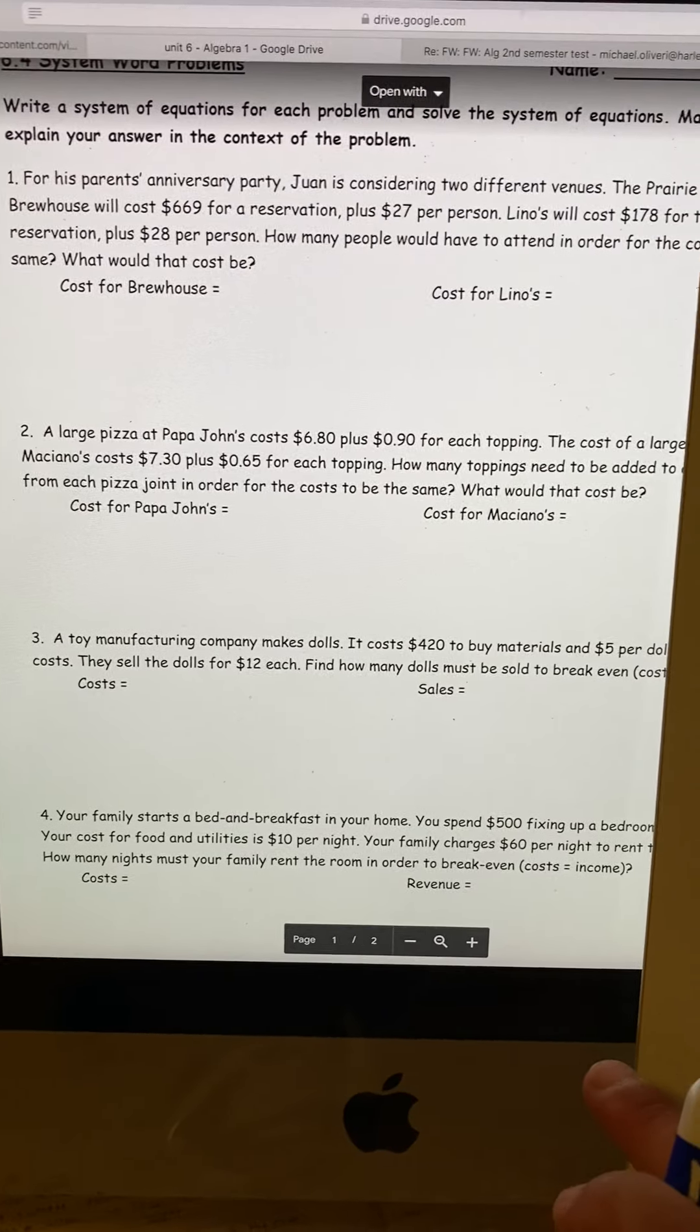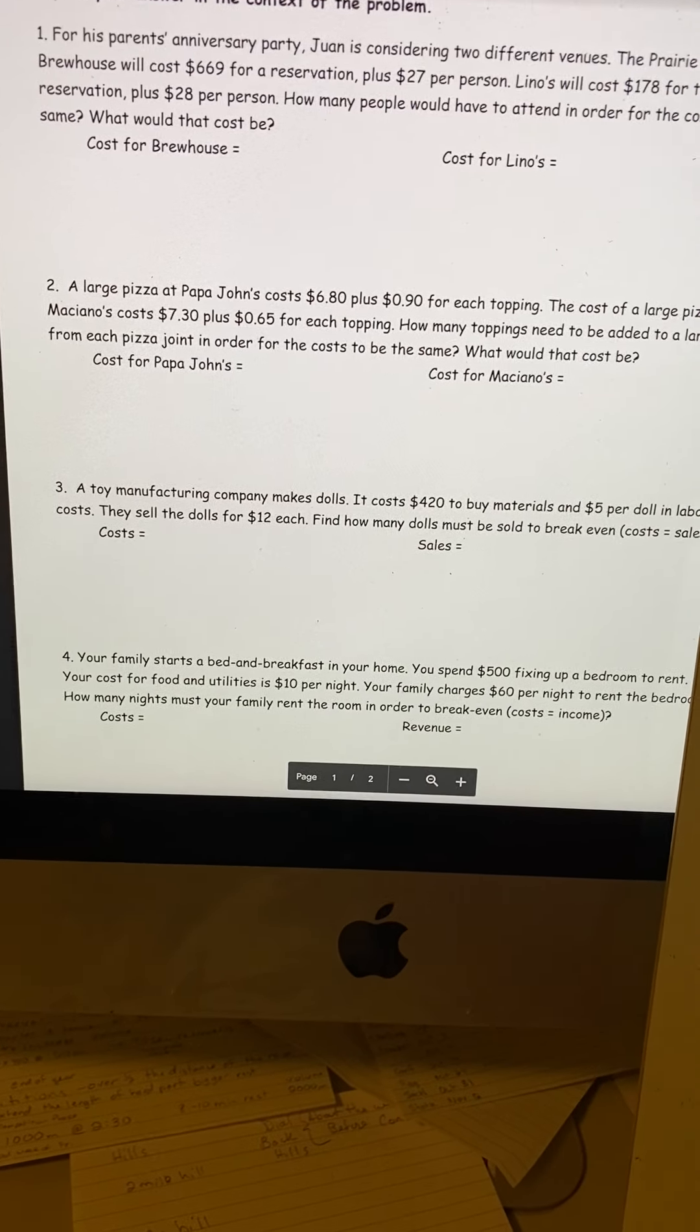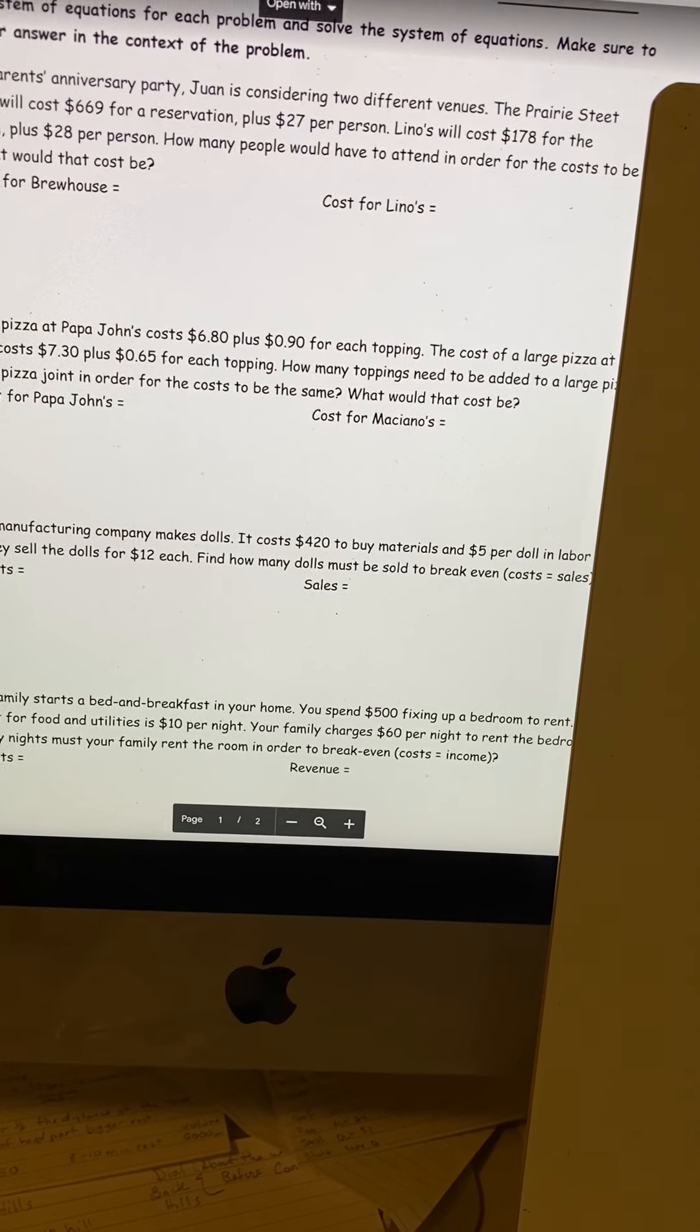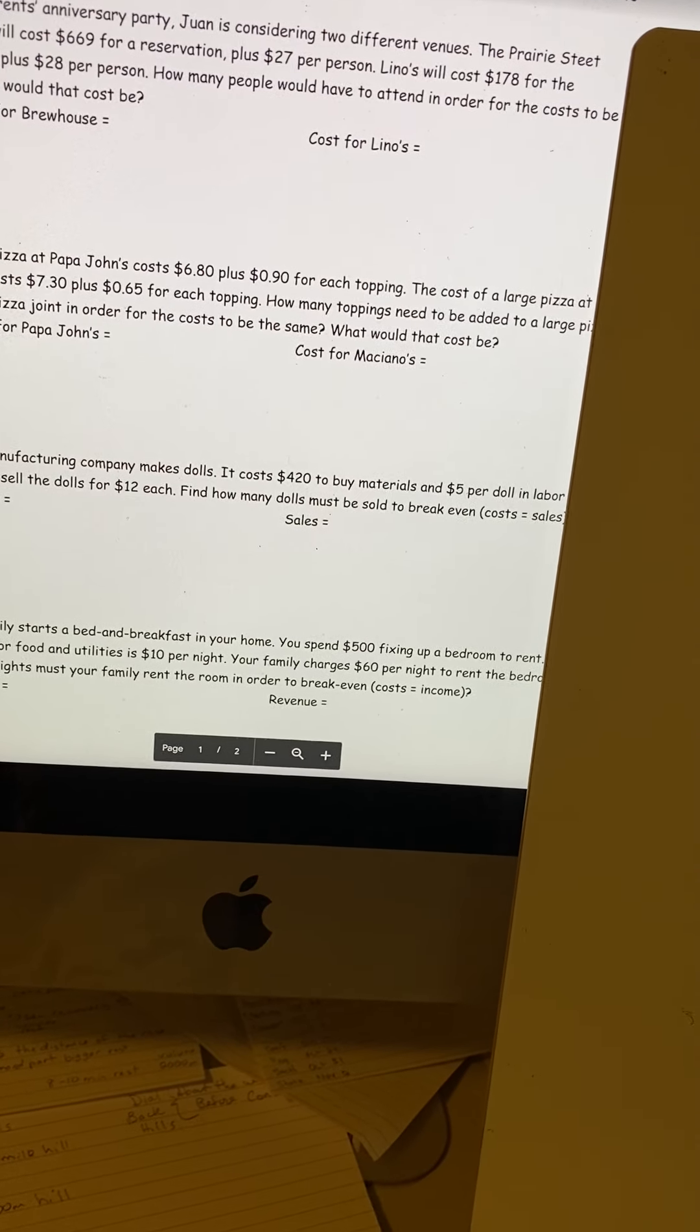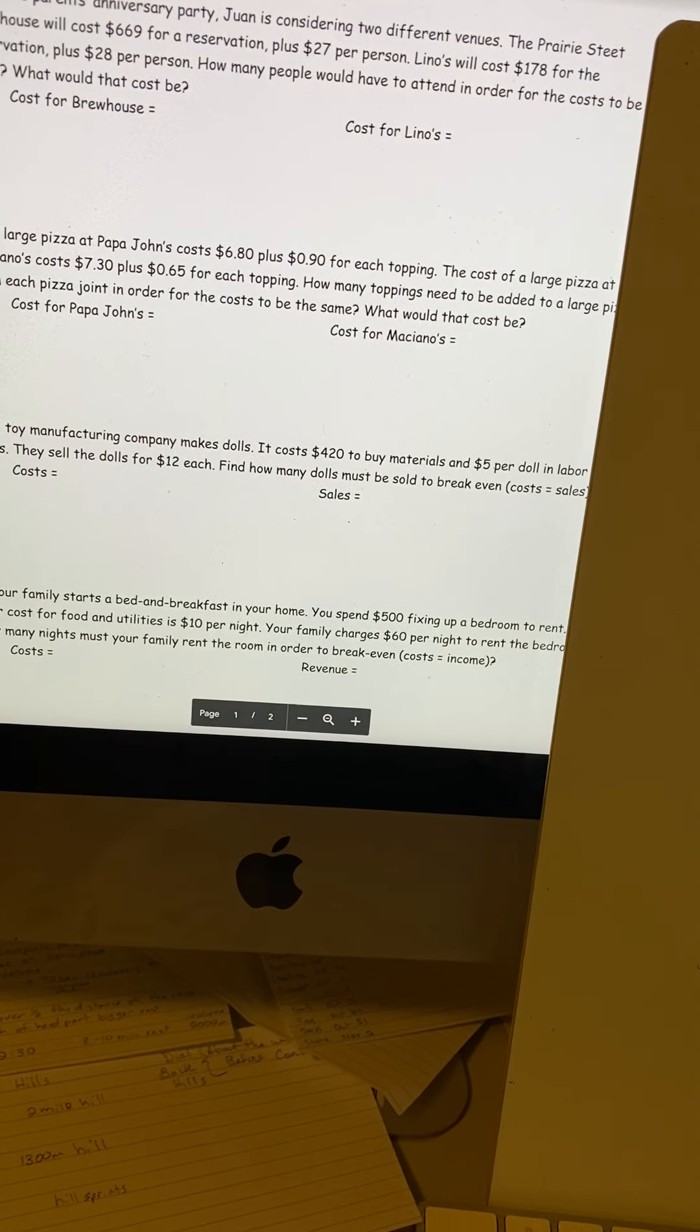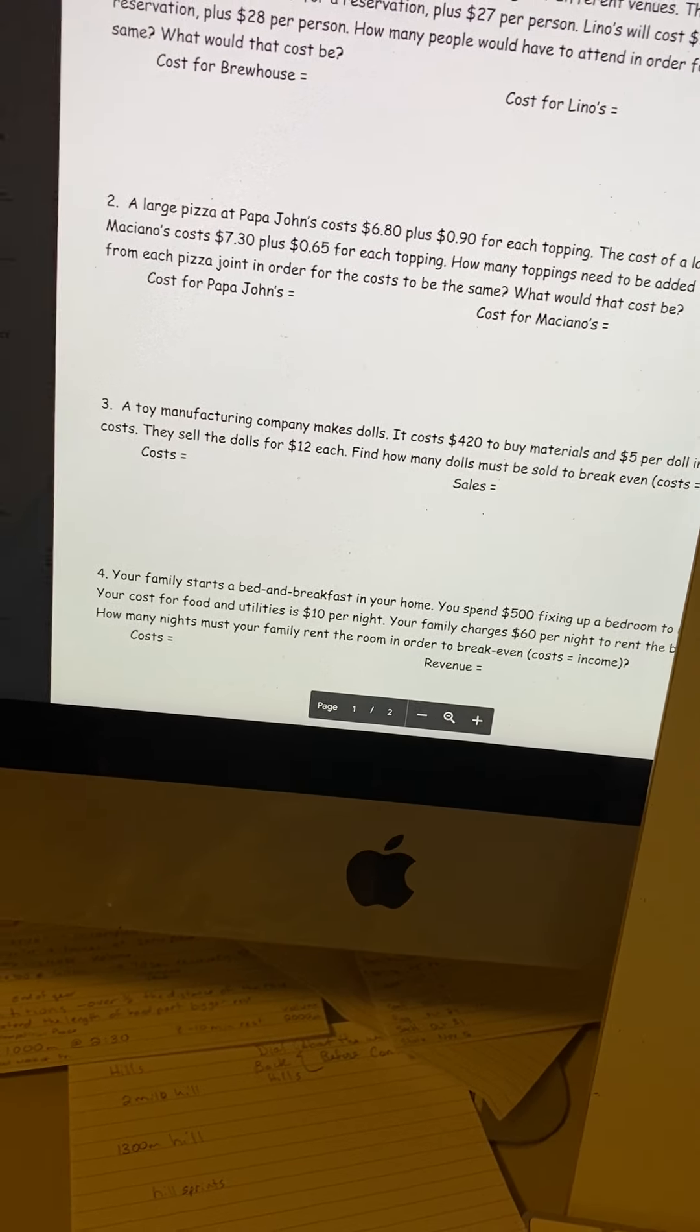For an anniversary party, someone is considering two different venues. Prairie Street Brewhouse will cost $669 for a reservation plus $27 per person. Lino's will cost $178 for the reservation and $28 per person. How many people would have to attend in order for the costs to be the same? What would that cost be?